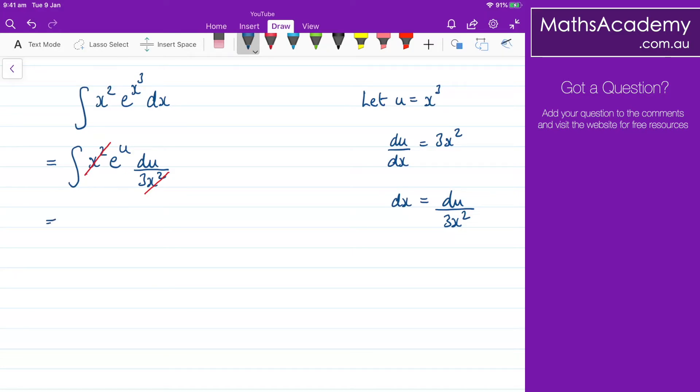And what I'll do is I'll bring the 3, so it'll be 1 third. I'll bring that outside the integral. And then I've got e to the u du. So now we have a very simple integral. The integral of e to the u is just e to the u. But I've got that third. So it's 1 third e to the u plus the constant of integration.